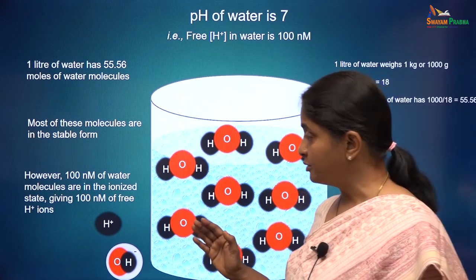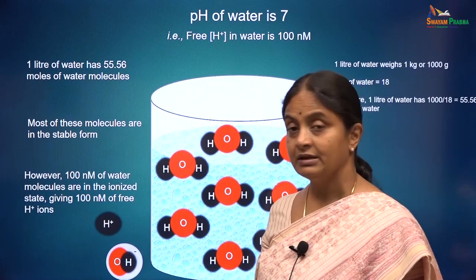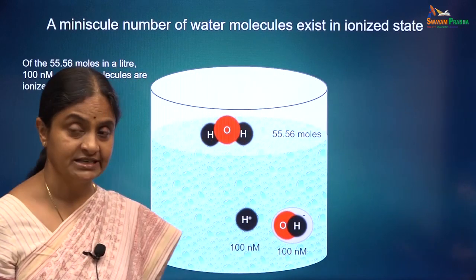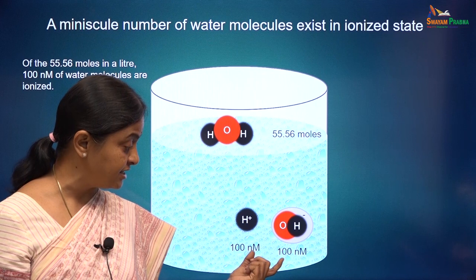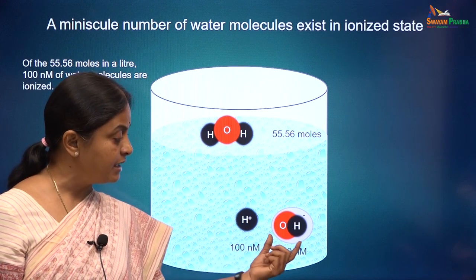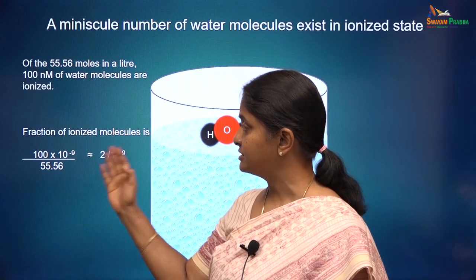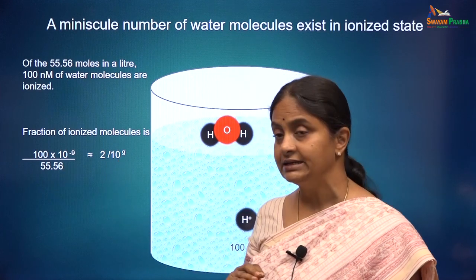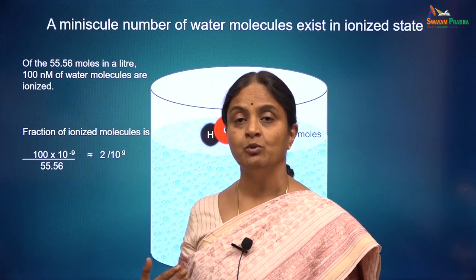We will now see what proportion of the stable water molecules is made up of the ionized water molecules. A very small amount — 100 nanomoles — of water molecules are in the ionized state, giving 100 nanomoles of free hydrogen ions, which keeps the pH of water at 7, and an equal amount of free hydroxyl ions. The fraction of ionized molecules is 100 nanomoles over 55.56 moles — less than 2 ionized water molecules for every billion stable water molecules.